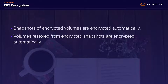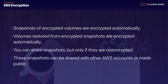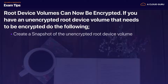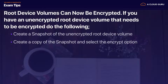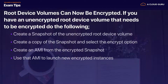Regarding encryption: snapshots of encrypted volumes are encrypted automatically, and volumes restored from encrypted snapshots are encrypted automatically as well. You can share snapshots, but only if they are unencrypted — you can share them with other AWS accounts or make them public. If you have an unencrypted root device volume that needs to be encrypted, create a snapshot of it, create a copy of the snapshot and select the encrypt option, create an AMI from the encrypted snapshot, then use that AMI to launch encrypted instances.